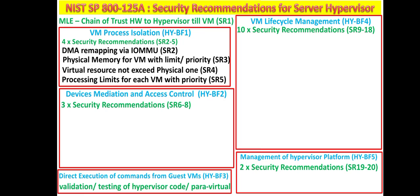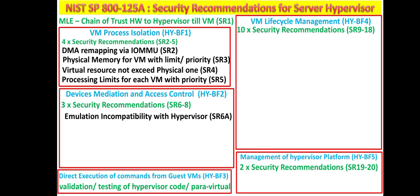For the second baseline function of device mediation and access control, there are three recommendations. Security recommendation six has three parts: A, B, and C. Part A addresses emulation complexity — the complexity of emulation should be manageable if you want to execute emulation alongside the hypervisor.